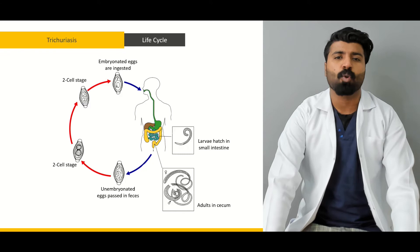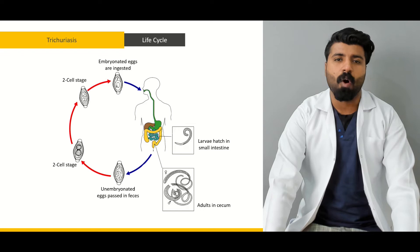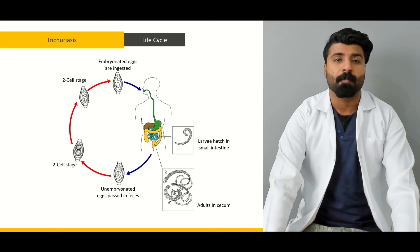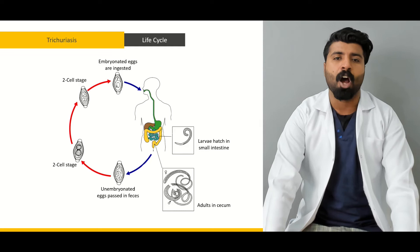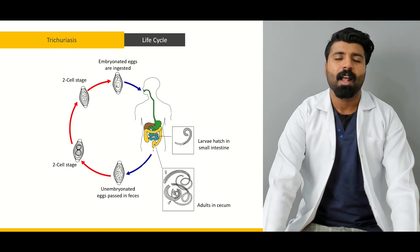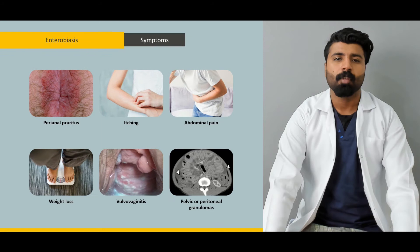Next we have trichuriasis, in which we're going to talk about what trichuriasis is and what's the causative organism. Next we're going to talk about the life cycle of trichuriasis — through what processes and what organisms this parasite goes through to get to our body, and in our body what pathology it causes and what's the outcome. Then we're going to talk about signs and symptoms of trichuriasis and try to differentiate it from other parasitic infections. Next we'll cover the diagnostic modalities we have for trichuriasis, how we definitively make our diagnosis, and then the treatment modalities available.